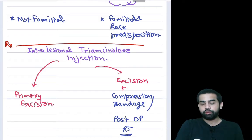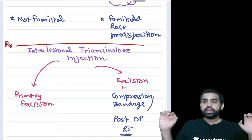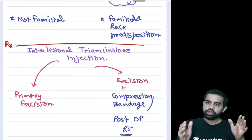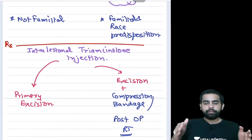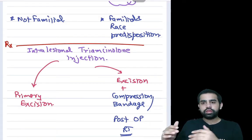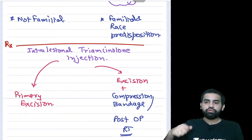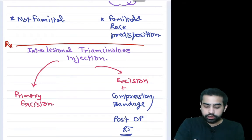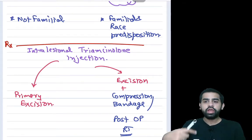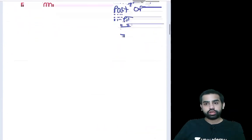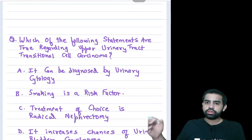For both hypertrophic scar and keloid, intralesional triamcinolone is preferred first. If a hypertrophic scar doesn't respond, primary excision with suturing is sufficient. But for a keloid not responding to triamcinolone, excision alone leads to 100% recurrence. You must add compression bandage or post-operative radiotherapy to prevent recurrence. Excision is not contraindicated in keloid — you must simply take measures to prevent recurrence.